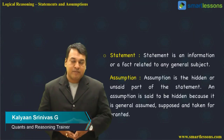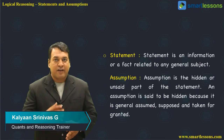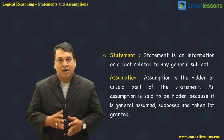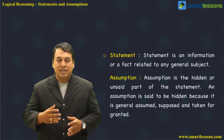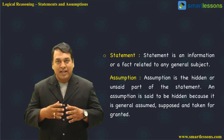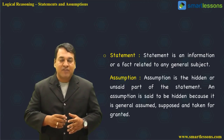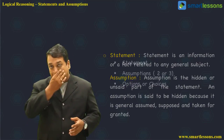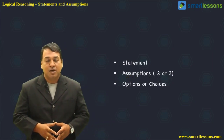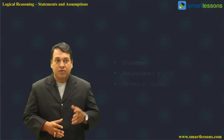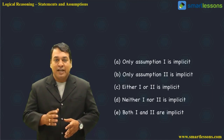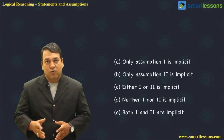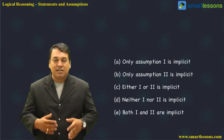Next, let's look at the chapter: statement and assumption. A statement is a fact which is given in the question. Based on that, the assumptions are the unsaid parts from the statement — not explicitly stated but assumed. Generally, we have a statement and two or three assumptions in the question, and we choose: only one is implicit, two is implicit, neither one or two are implicit, or both one and two are implicit.